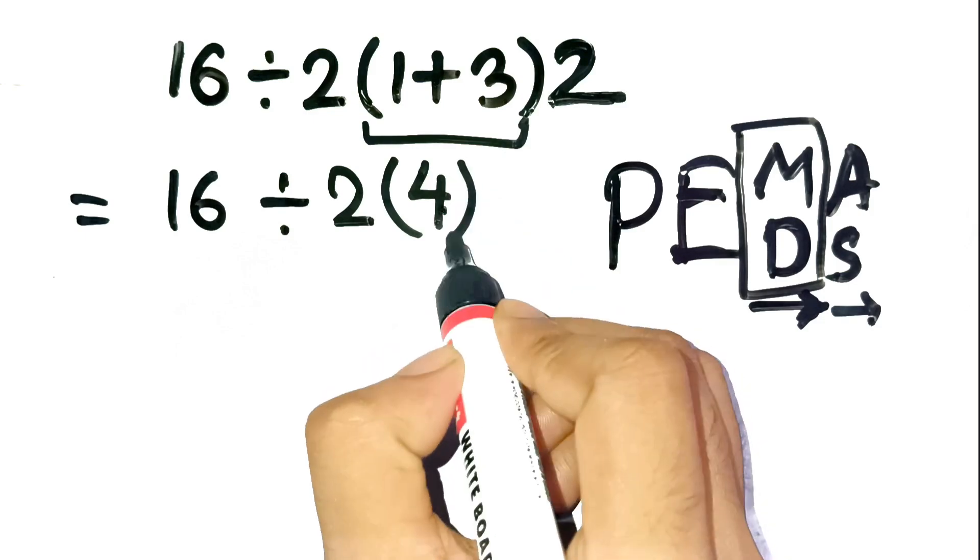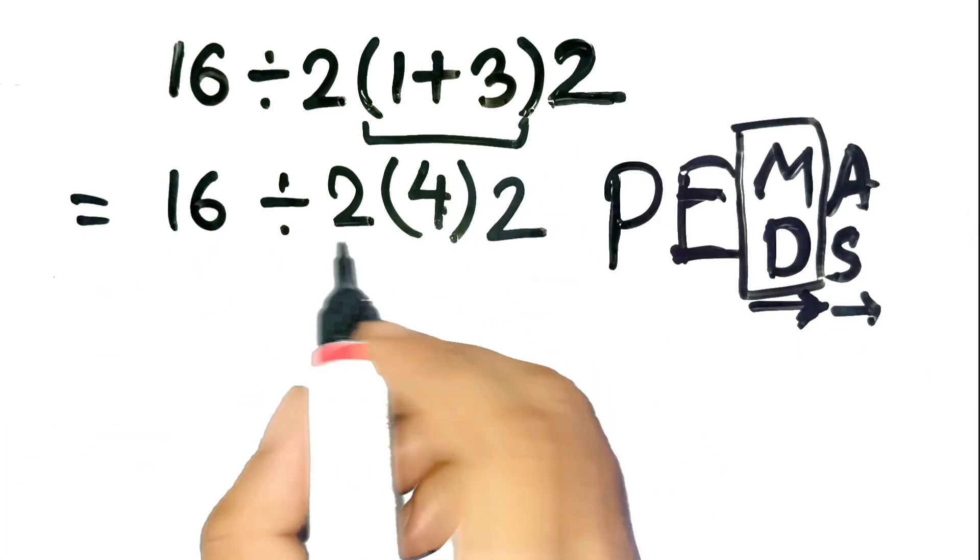Now the expression becomes 16 divided by 2, open parenthesis, 4, close parenthesis, 2. Here's where people usually mess up.